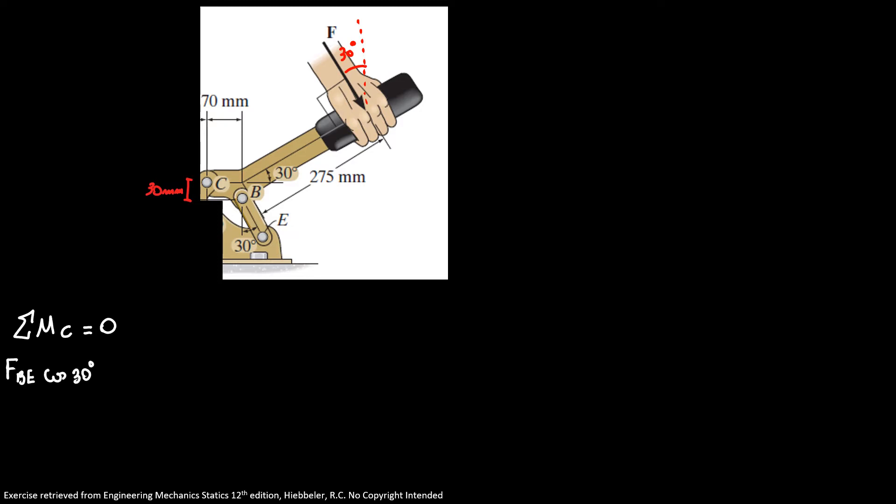So we're gonna start with the force BE cosine of 30 times 70 minus force BE sine of 30 times 30 millimeters minus and then 350 cosine of 30 times all the length.